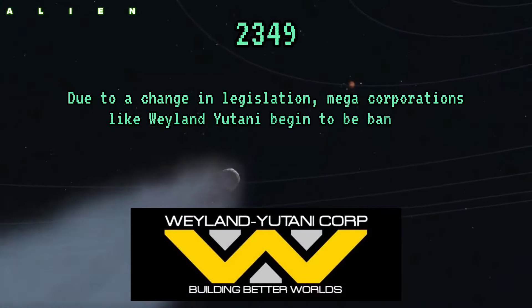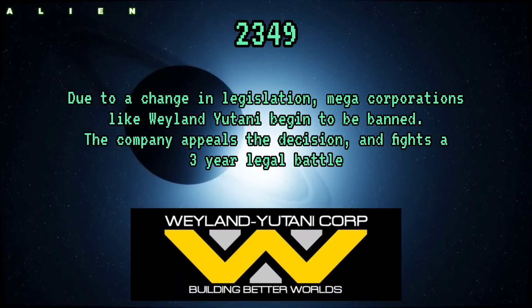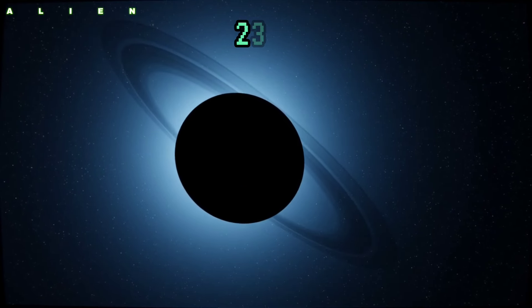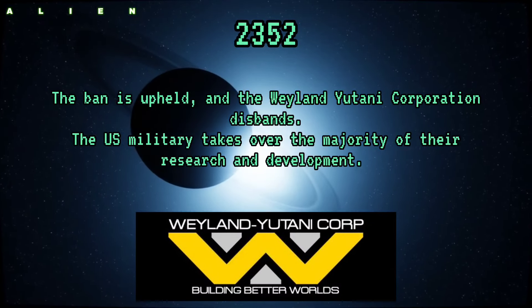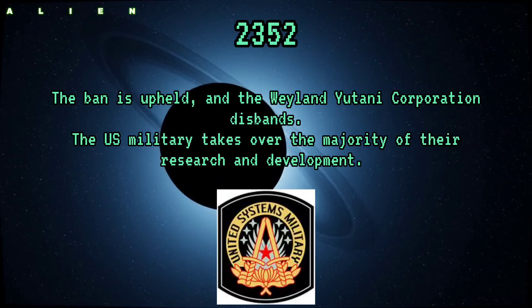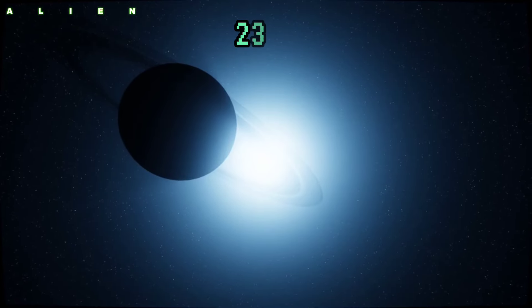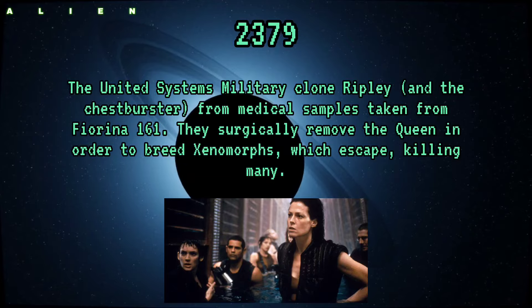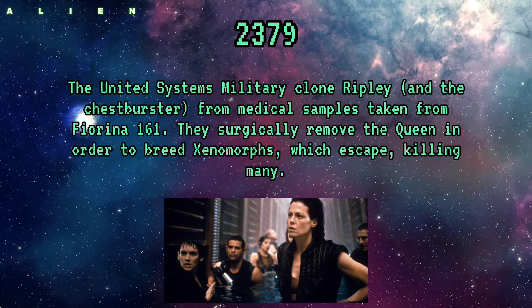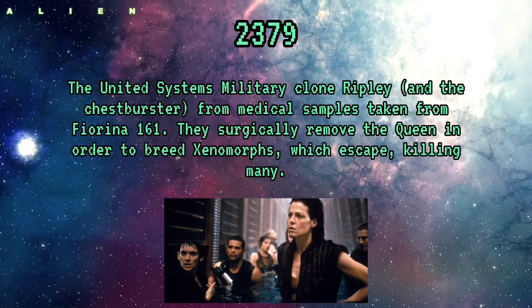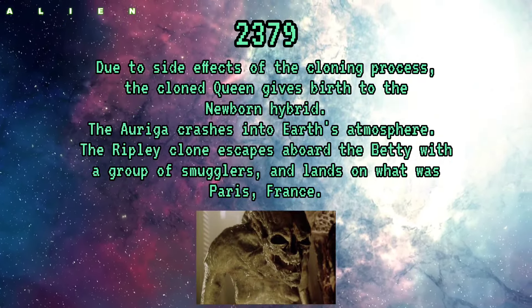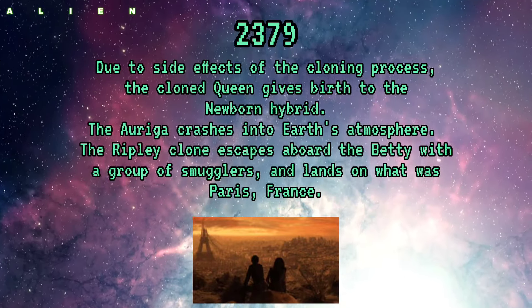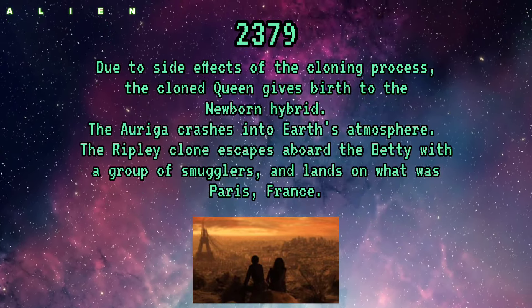2349: Due to a change in legislation, mega corporations like Weyland-Yutani begin to be banned. The company appeals and fights a three-year legal battle. 2352: The ban is upheld and the Weyland-Yutani corporation disbands; the US military takes over the majority of their research and development. 2379: The United Systems military clones Ripley and the chestburster from medical samples taken from Fiorina 161. They surgically remove the queen to breed xenomorphs, which escape and kill many. Due to side effects of the cloning process, the cloned queen gives birth to the Newborn hybrid. The Auriga crashes into Earth's atmosphere and the Ripley clone escapes aboard the Betty with a group of smugglers, landing on what was Paris, France.